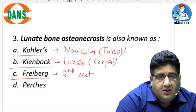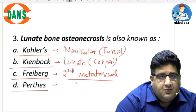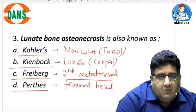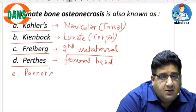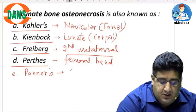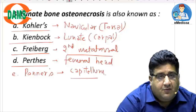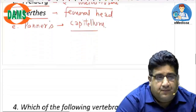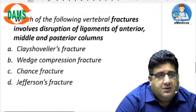Freiberg's disease is osteonecrosis of the second metatarsal, usually the head. Perthes is osteonecrosis or osteochondritis of the femoral head. One more to add: Panner's disease is osteonecrosis of the capitulum of the humerus. So remember all four to five eponyms — Kohler, Kienbock, Freiberg, Perthes, and Panner — each associated with a specific bone.